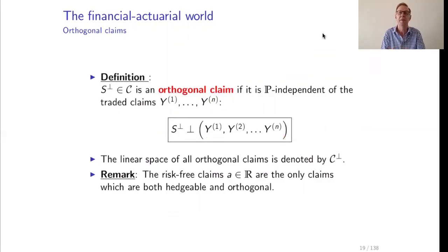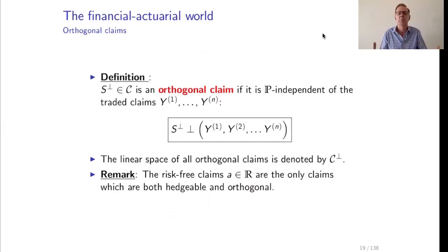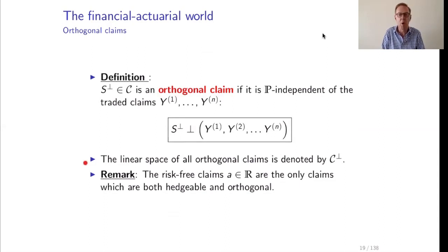An orthogonal claim's outcome has nothing to do with the outcome of the financial market at time one. If we know something about the financial market outcome, it will have no influence on the orthogonal claim. An example is the claims of an automobile insurance portfolio at time one, which in general have nothing to do with financial market evaluation. Because they cannot be hedged, such claims must be buffered by capital, so their value will be an expectation plus a risk margin.